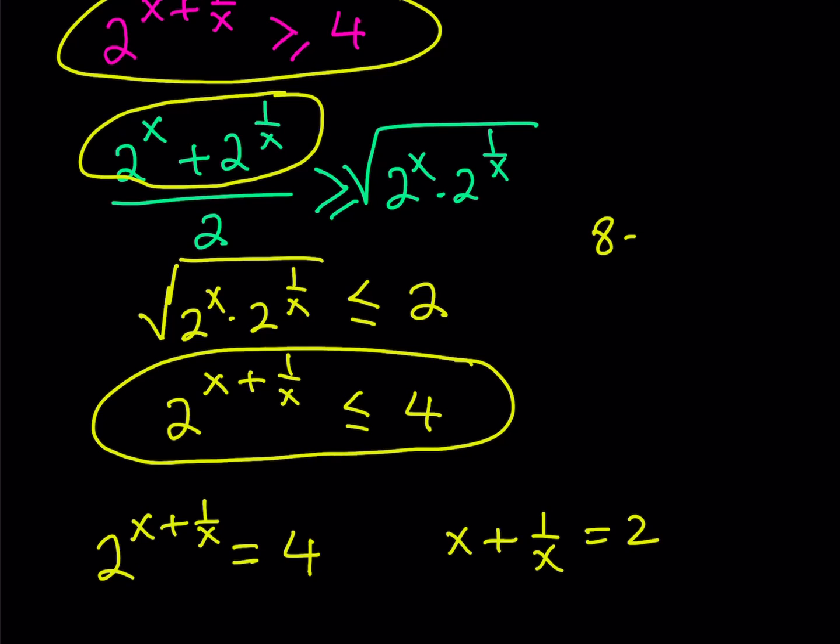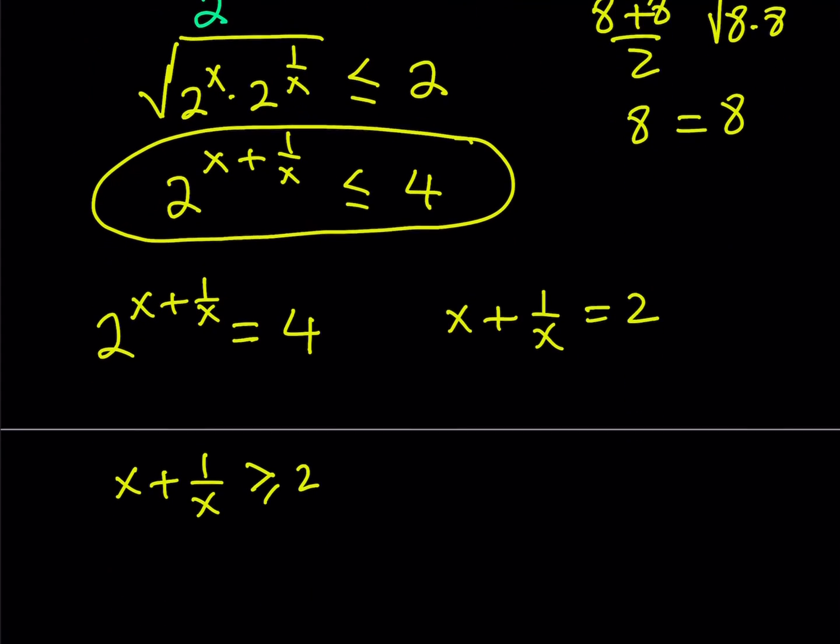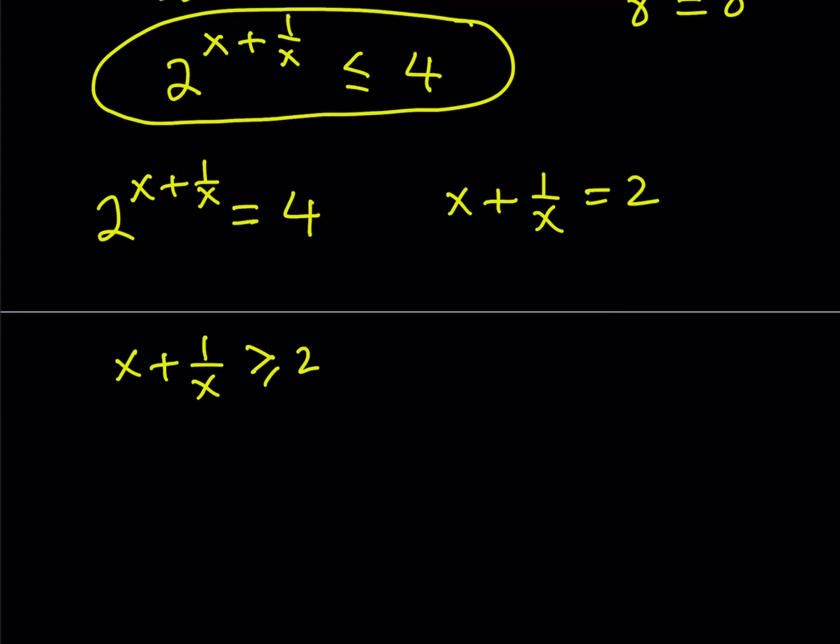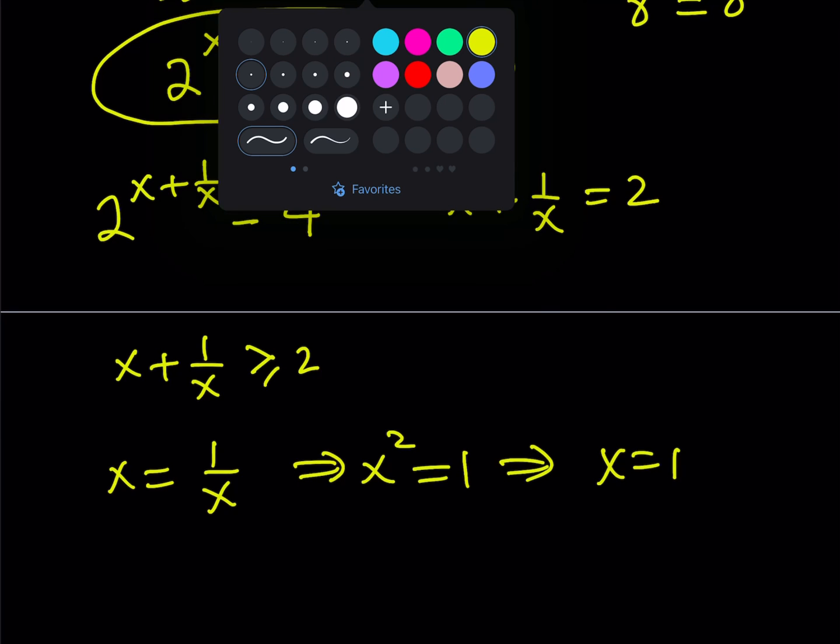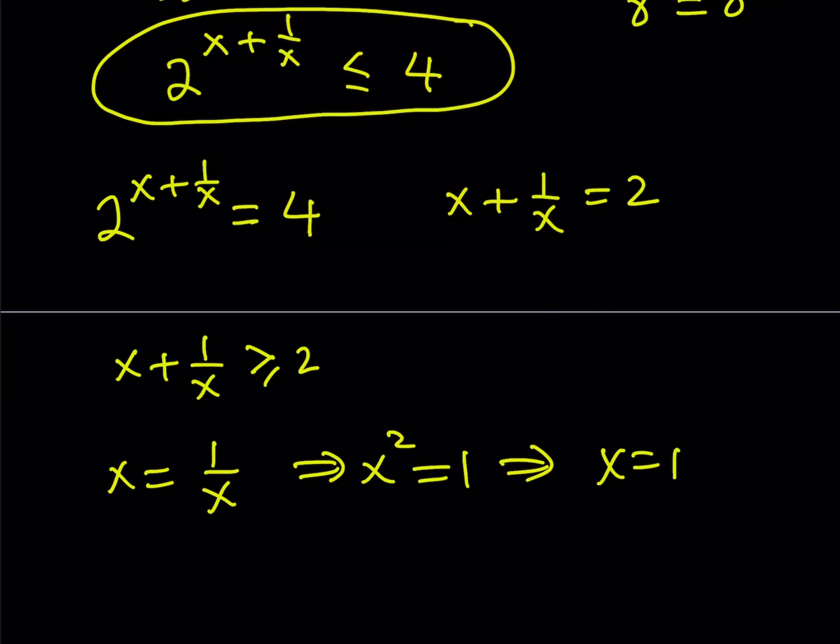Okay. Cool. So this just means that x equals 1 over x. But remember that x needs to be positive. From here, we only get one solution, x equals 1. And that just happens to be the only solution to this equation.